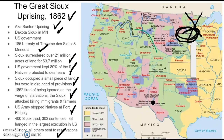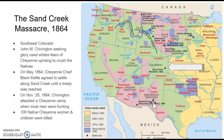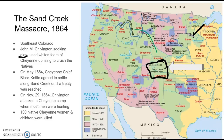We see other tribes here — the Cheyenne, who were allies with the Sioux. There was an increase of fear that the Cheyenne were also going to start an uprising. That leads us to our second major event: the Sand Creek Massacre, which takes place in Colorado in 1864. The individual involved is John Chivington. He was seeking glory and used the fears of whites against the Cheyenne to crush the Native Americans.